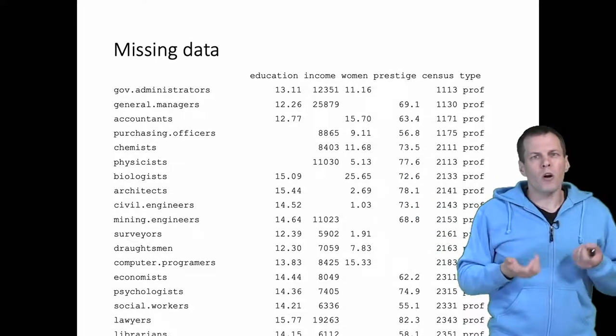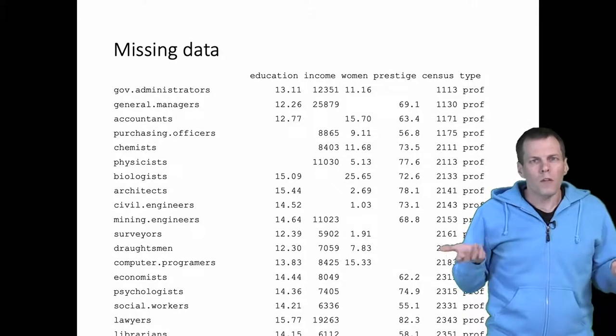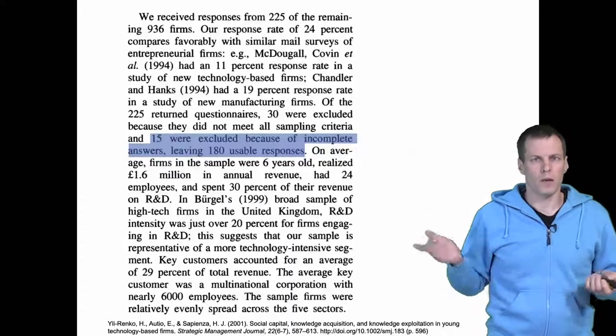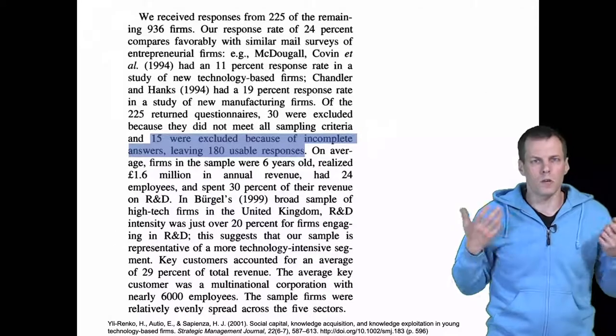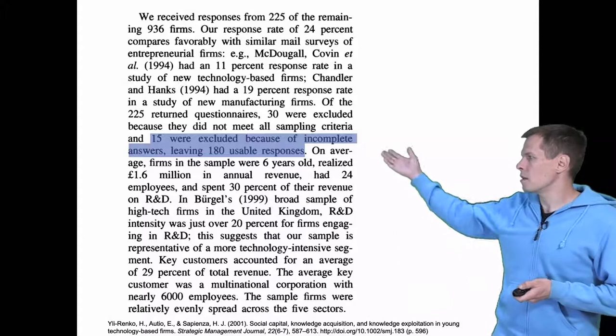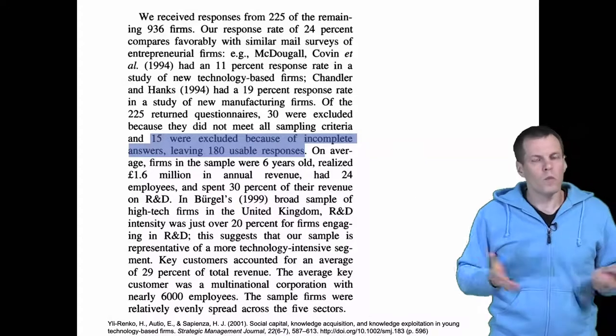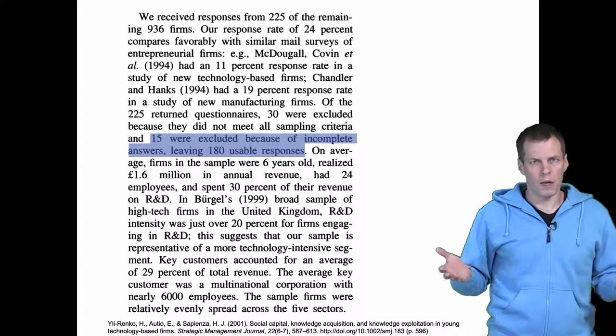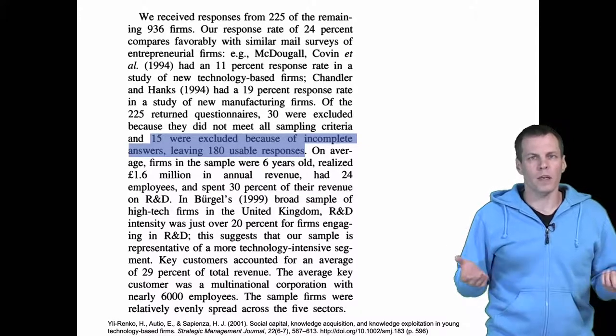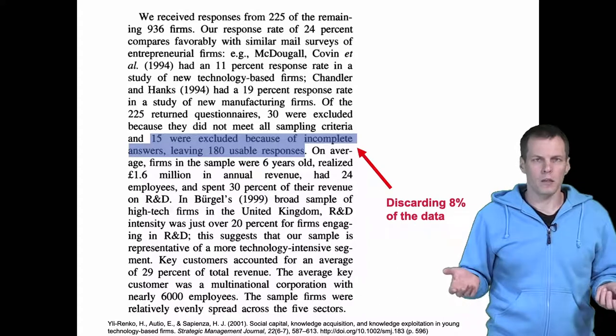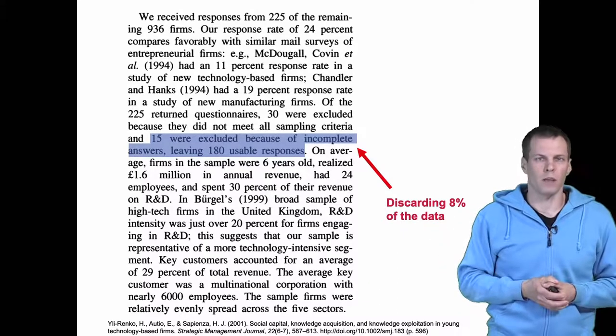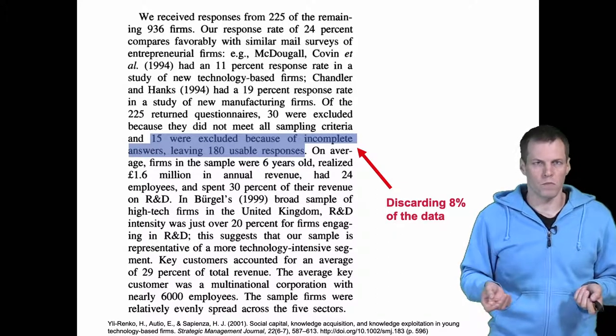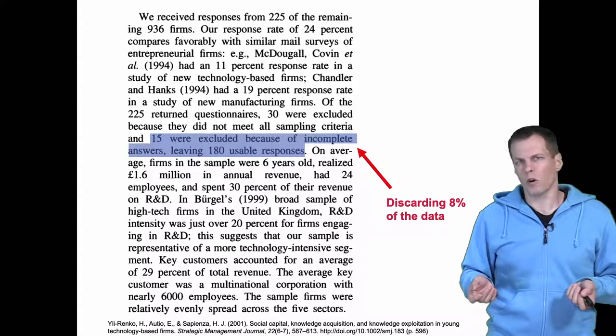This is a very common scenario. Quite often researchers face a limited number of missing cases or missing values. For example, in Ylirenko's article that I use as an example when teaching measurement, they report that they had 180 final cases after dropping 15 observations. The amount of data that they drop is about eight percent. Is it okay to throw eight percent of your data away without analyzing the impact of doing so? Probably not always.